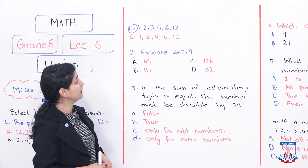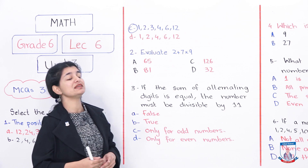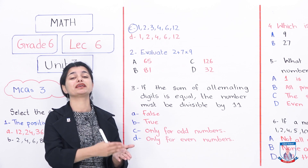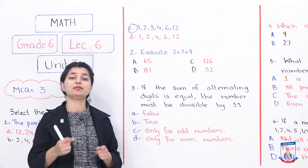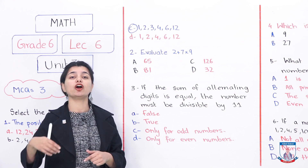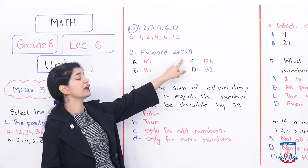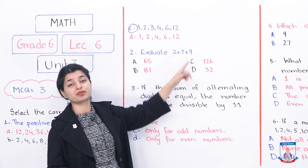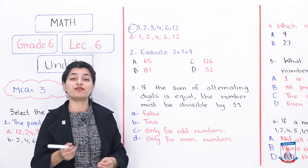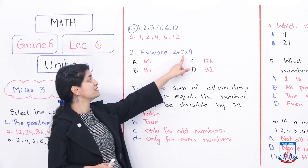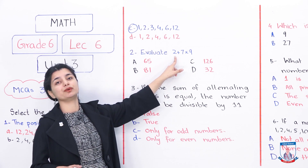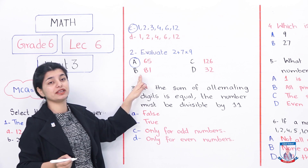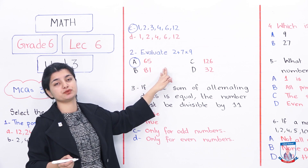The next multiple choice question is: evaluate 2 + 7 × 9. Now, using DMAS — division, multiplication, addition, and subtraction — you first do multiplication, then addition. So you do 9×7 first. What is 9×7? It's 63. When you have 63, you add 2. What is 63+2? It's 65. That means option A is our correct answer for this one.